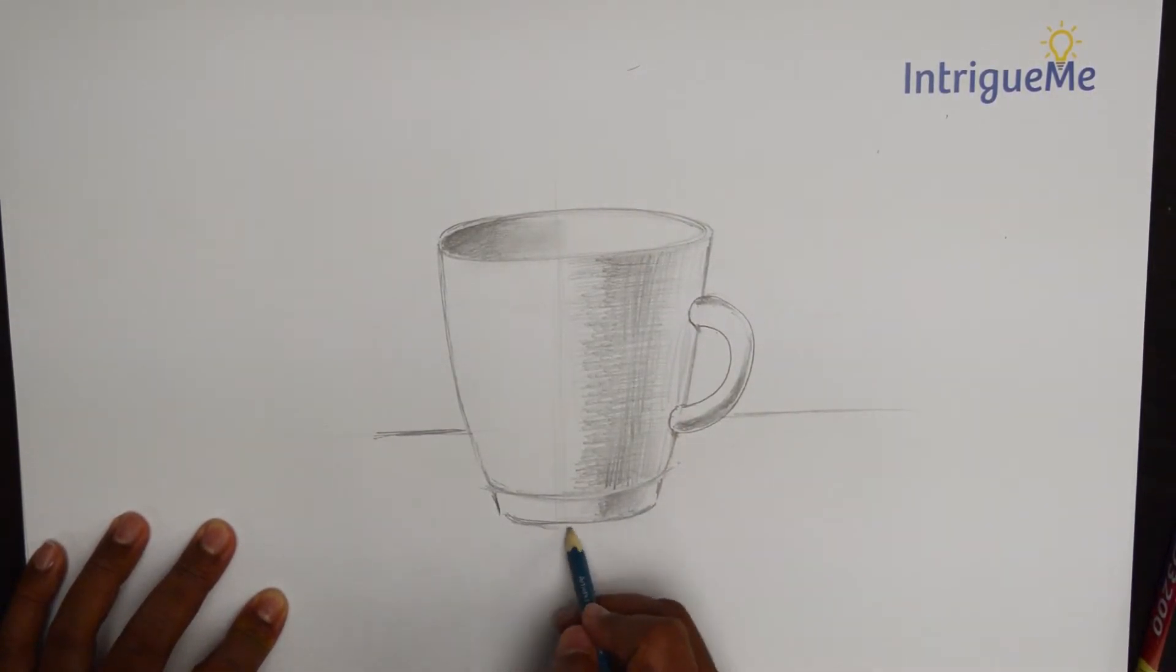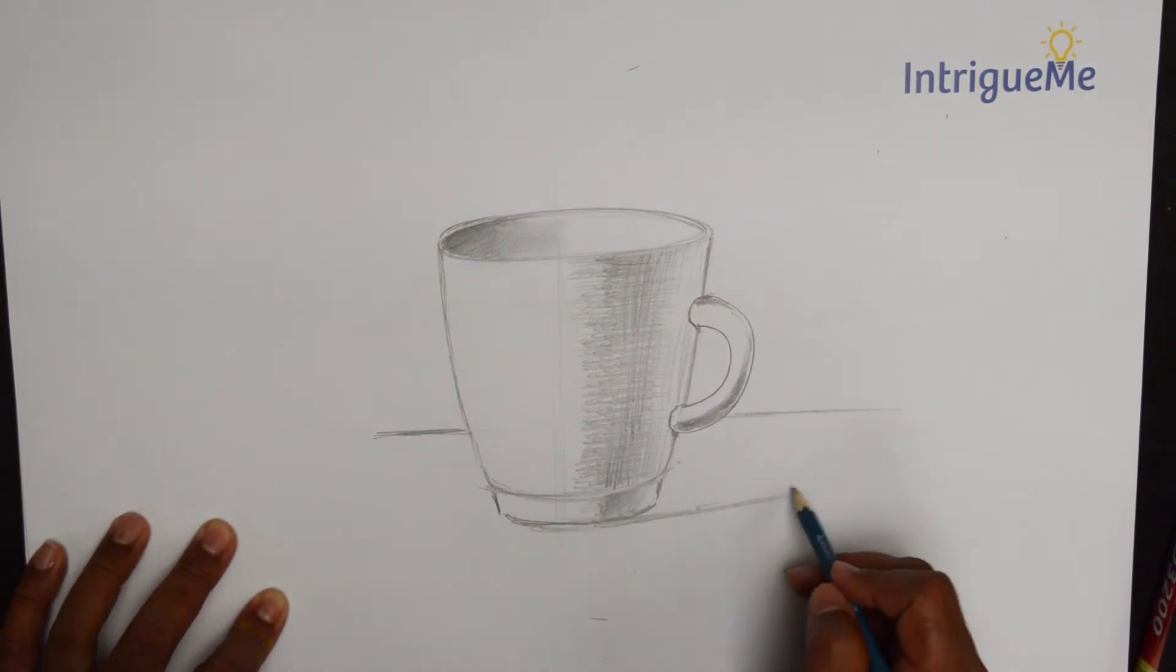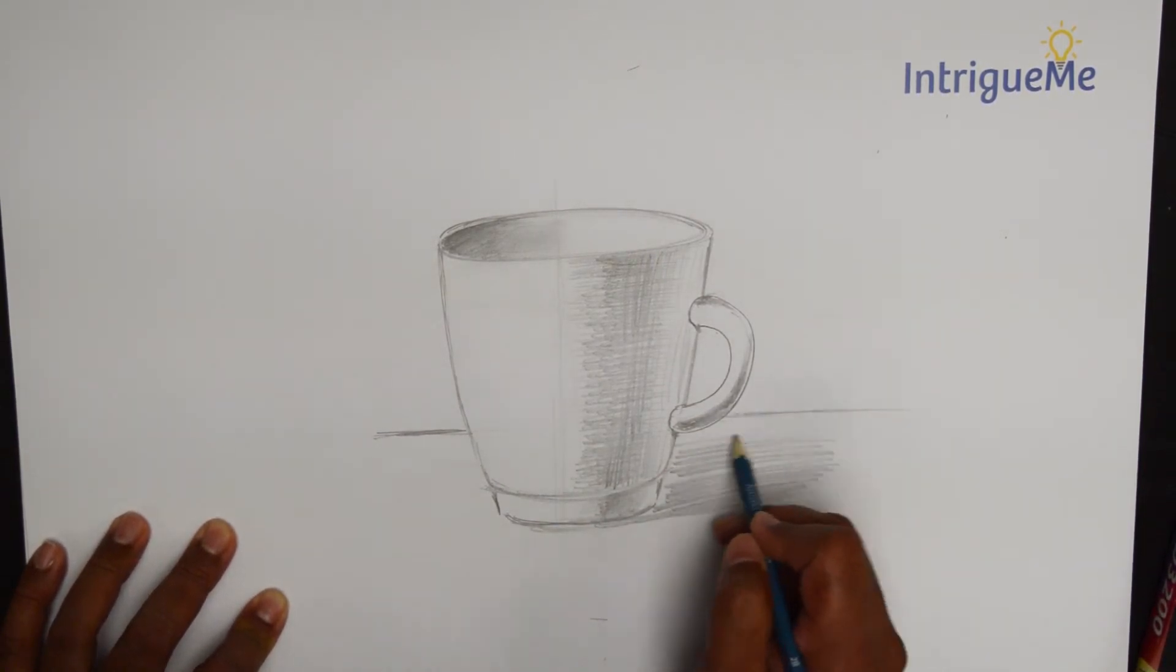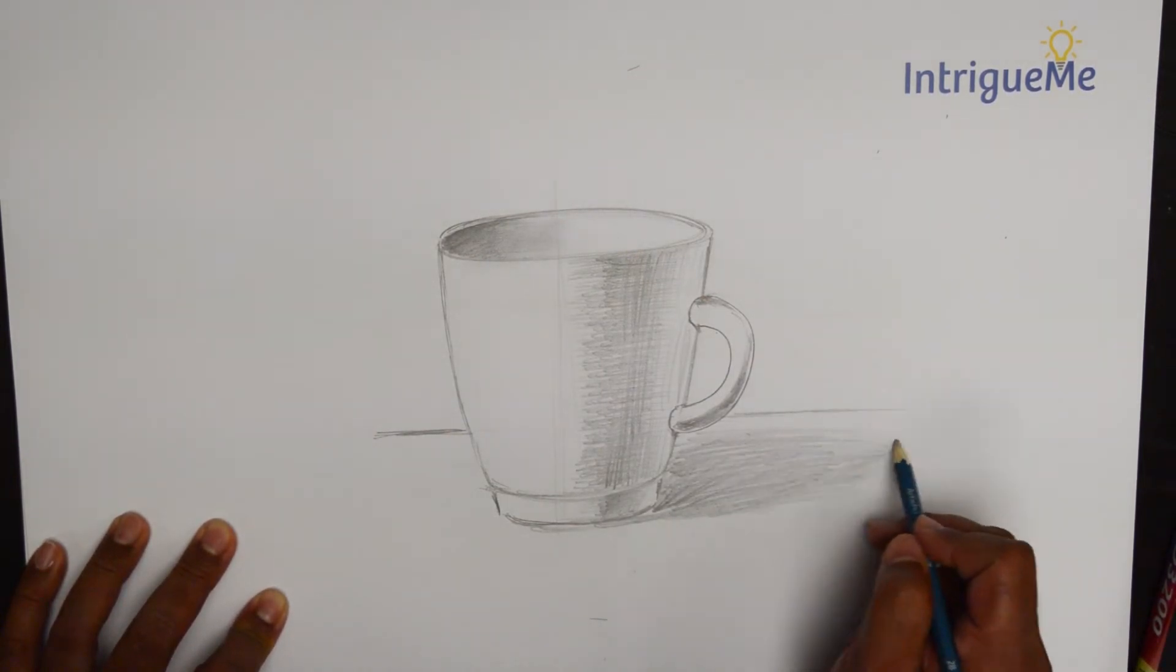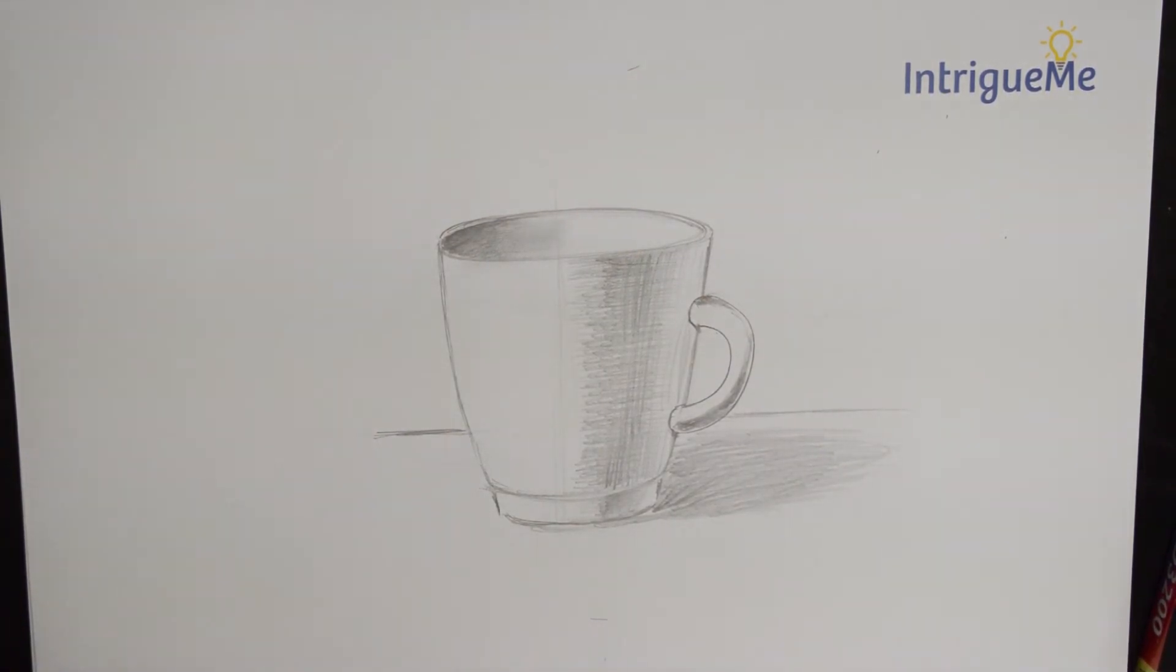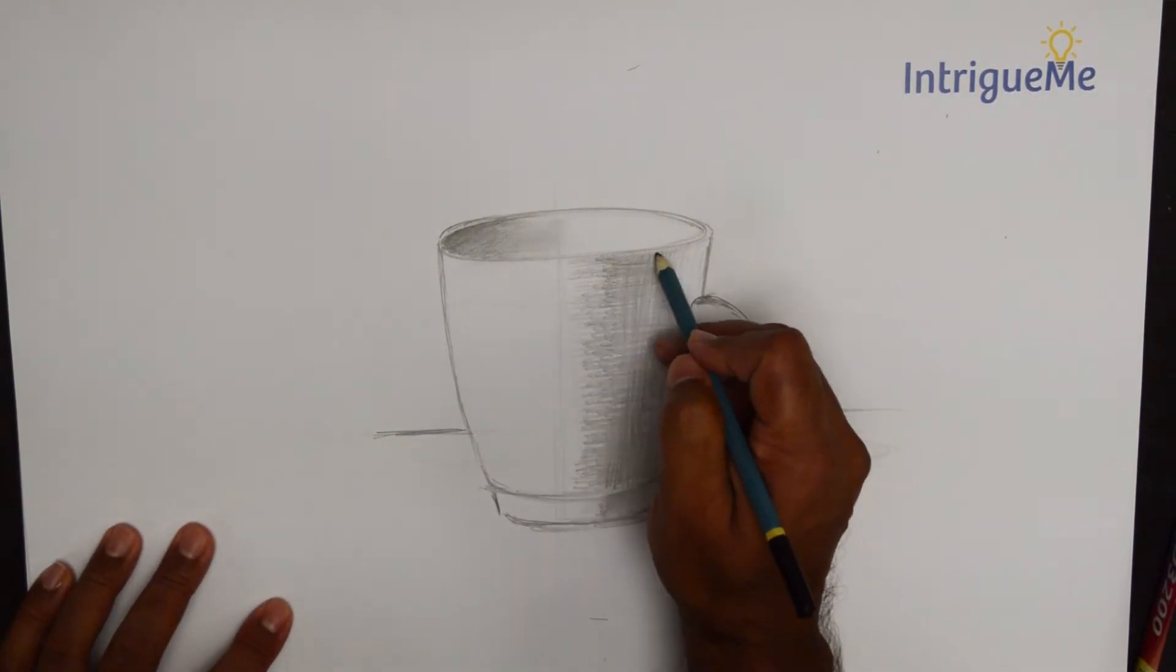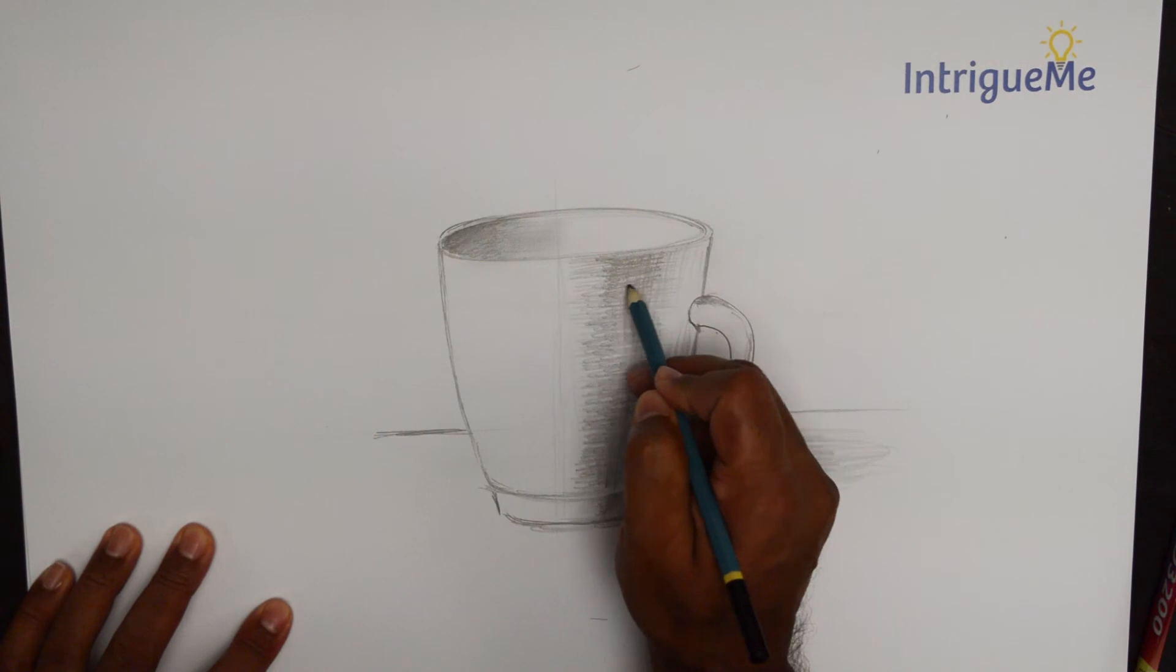And then of course the all important thing that there is depending on how strong the light source is. You put in a bit of crosshatch. Right there. Now if I intensify this shadow a little bit.